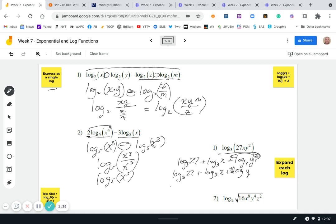And last but not least, you can notice that this log base three of 27, three to what power equals 27? We know that's three to the third power. So this actually evaluates to three plus log base three of x plus two log base three of y. So we did a good job on that one.